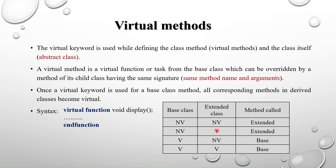To summarize the table: if the base class has a virtual method, irrespective of the extended class you will get the child class method. If the base class method is non-virtual, irrespective of the extended class you will get the extended class method — based on which object you assigned, that child class method will execute.